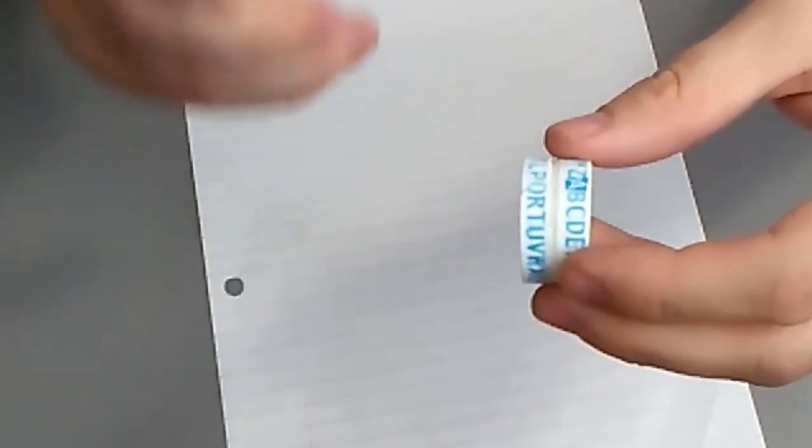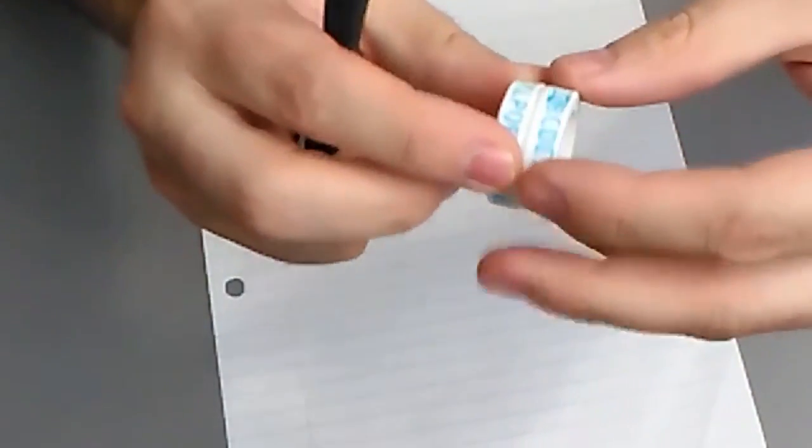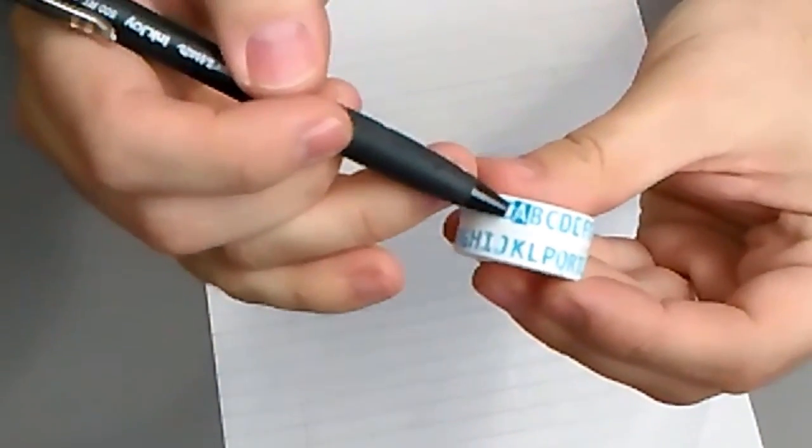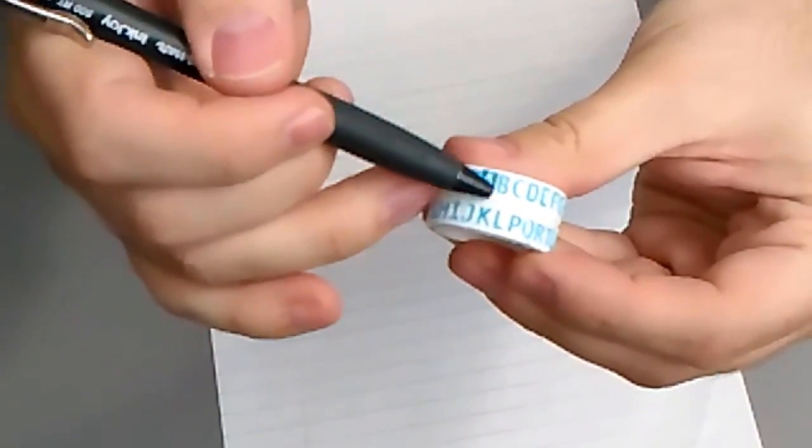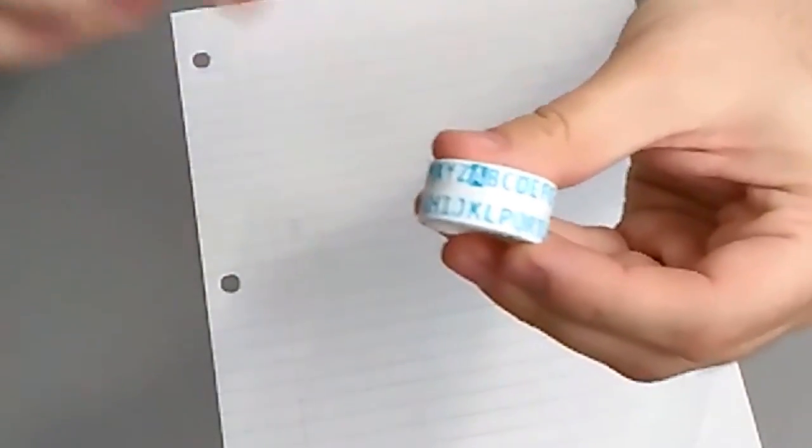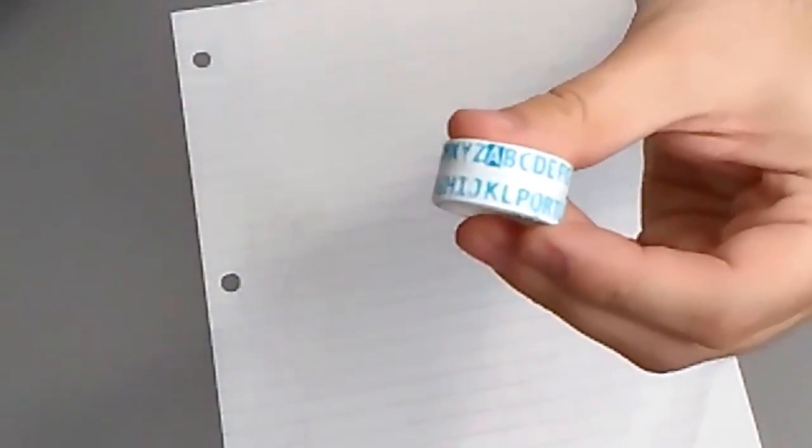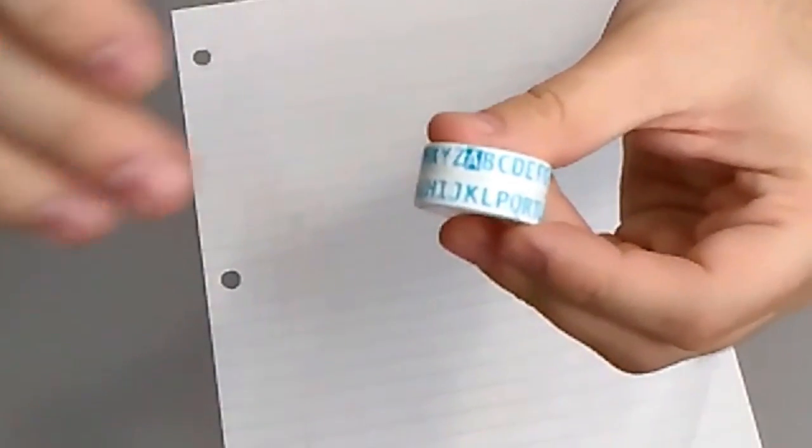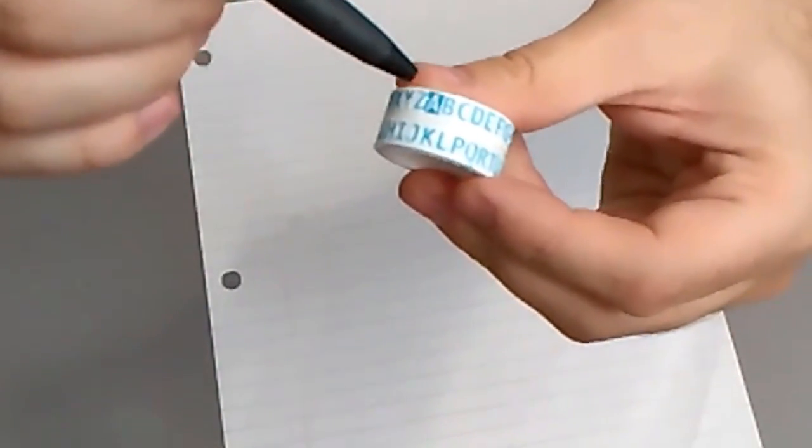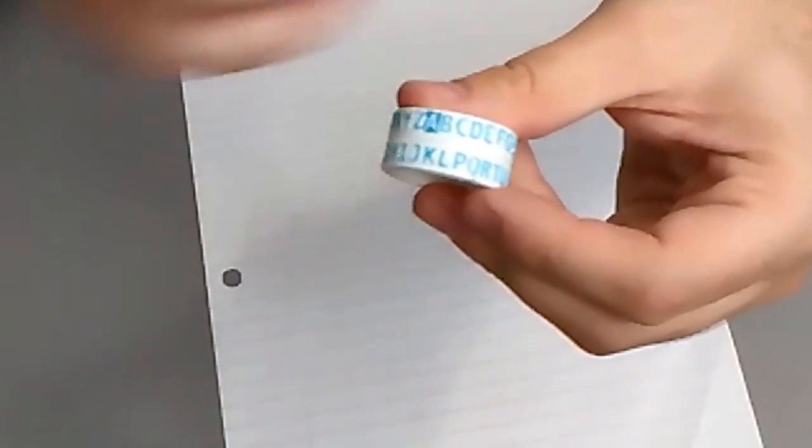The first thing you have to do is choose a key. A key is just, you'll notice that on the top alphabet here, that the A has a, it's kind of in reverse and darkened. That's because that is telling you how to set up the key, and the key is any letter of the alphabet.